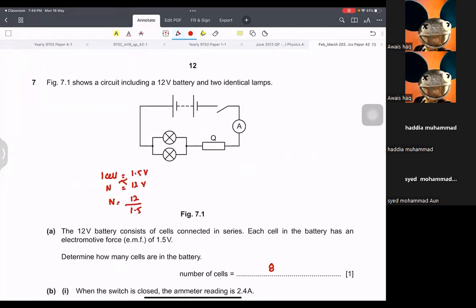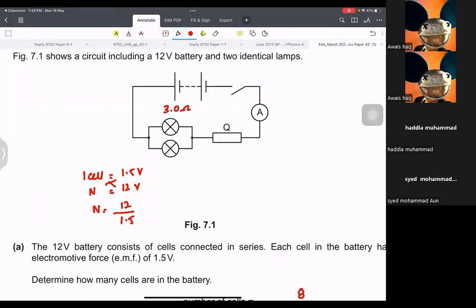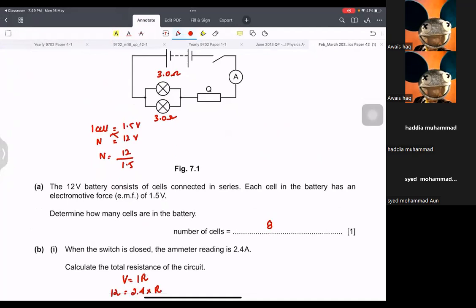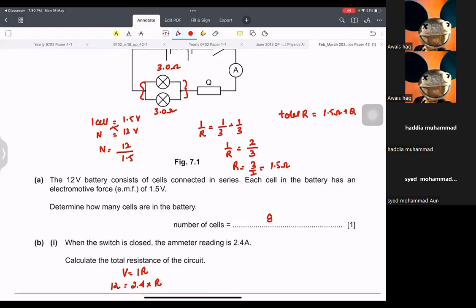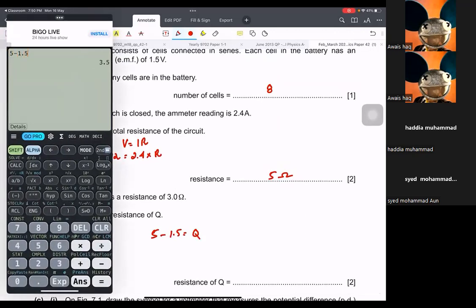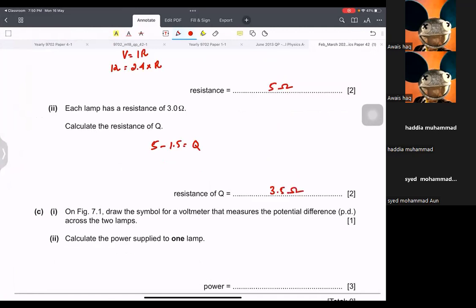Each lamp has a resistance of 3 ohm. So this guy here has 3 ohm. This guy here has also 3 ohm. Calculate the resistance of Q. Now, if you look at it, these are parallel. So first of all, let's find out the total resistance here. So 1 upon 3 plus 1 upon 3 equals to 1 upon R. 1 upon R is equal to 2 upon 3. So R is 3 upon 2, which is just 1.5 ohm. And then you see the total resistance is equal to 1.5 ohm plus Q because this is in series with this. So total resistance was 5. 5 minus 1.5 is equal to Q. So that is 3.5 ohms.